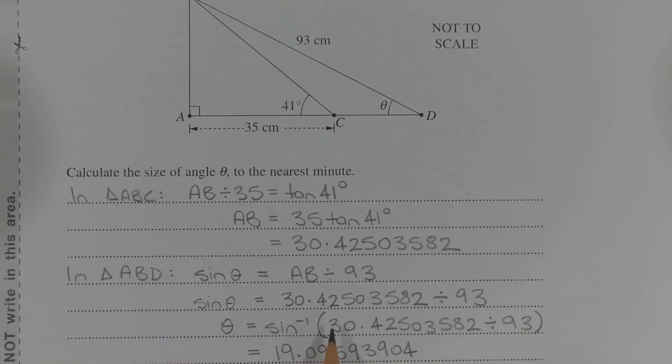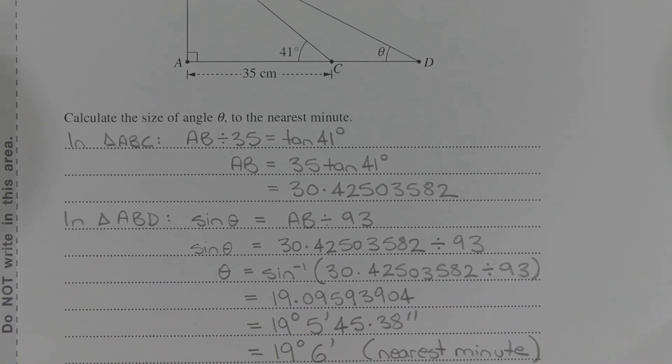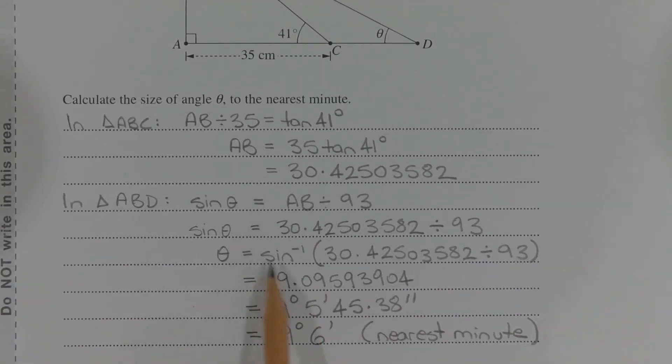Taking the inverse sine of both sides of the equation to make theta the subject, we get theta equals inverse sine of 30.42503582 divided by 93. And evaluating the right hand side, we get theta equals 19.09593904.